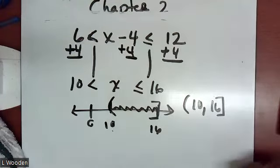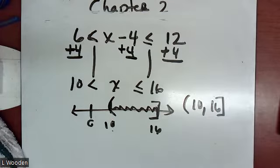Solving a compound inequality: here you have two inequality symbols — this is considered an 'and' inequality. The goal is to isolate x by adding 4 across each inequality symbol on both sides. Be careful to cover both sides.